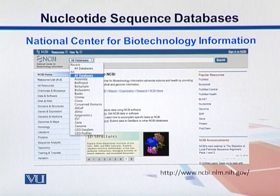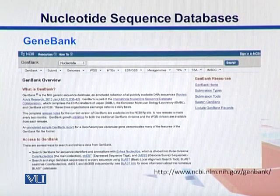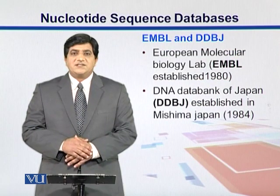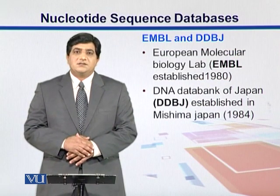In this diagram we see the page where you can search for any kind of data. There is a drop-down list that provides different options. Here is the page for GeneBank — if you want to look for nucleotides and genome sequences, this is the best resource.